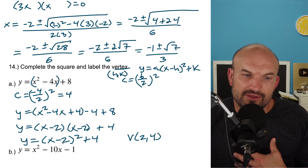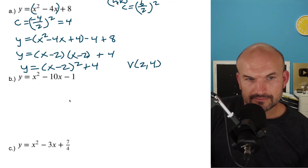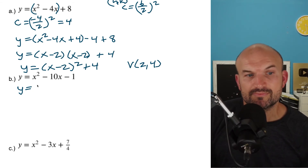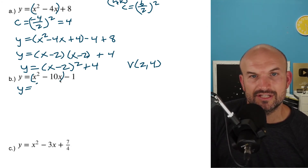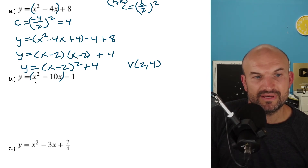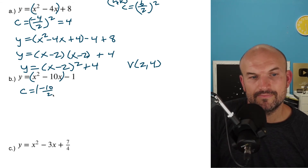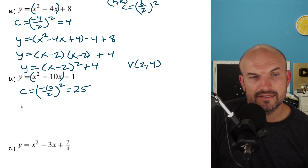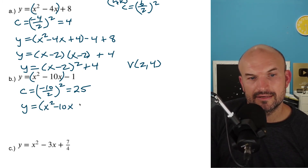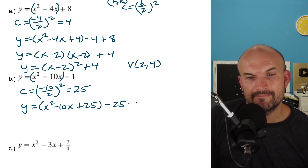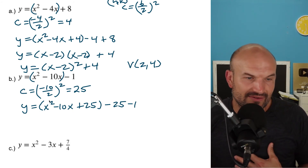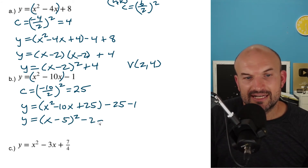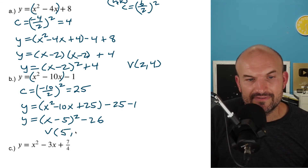So I can write this as x minus two quantity squared plus four. The vertex here is two comma four, because it's x minus h — the minus two actually shifts it to the right two. In this next example, I'm going to group the first two terms and figure out my b, which is negative ten. So c equals negative ten divided by two, quantity squared. Negative ten divided by two is negative five, and negative five squared is twenty-five. So I add and subtract 25: y equals x squared minus ten x plus 25, minus 25, minus one. This is a perfect square trinomial, giving y equals x minus five, quantity squared, minus 26. The vertex is positive five comma negative 26.